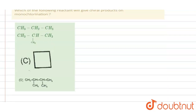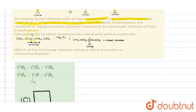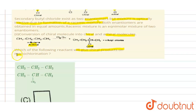The second point is the conversion of a chiral molecule into chiral and achiral molecules — for example, converting achiral butane to chiral butane via monochlorination. The question asks: which of the following reactants will give chiral products on monochlorination? We need to check each compound.